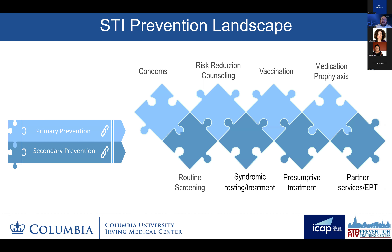This is my version of the STI prevention landscape, and I break it up into primary and secondary prevention. Primary prevention is focused on avoiding disease entirely, with interventions done before a disease ever occurs. This includes evidence-based interventions like condoms, risk-reduction counseling, vaccination, and medication prophylaxis. Secondary prevention involves screening to offer early detection and diagnosis, syndromic testing and treatment, presumptive treatment, and partner services including expedited partner therapy—treating partners without a formal evaluation.